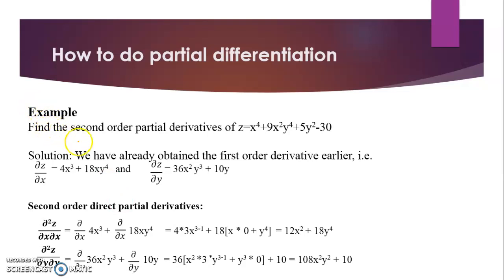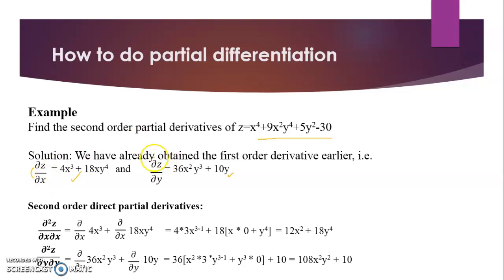In the example, we already found that dZ/dX = 4X³ + 18XY⁴ and dZ/dY = 36X²Y³ + 10Y. For the direct partial derivatives, we differentiate dZ/dX again with respect to X only, and dZ/dY again with respect to Y only. Differentiating dZ/dX again with respect to X: applying the power rule to 4X³ gives 12X².